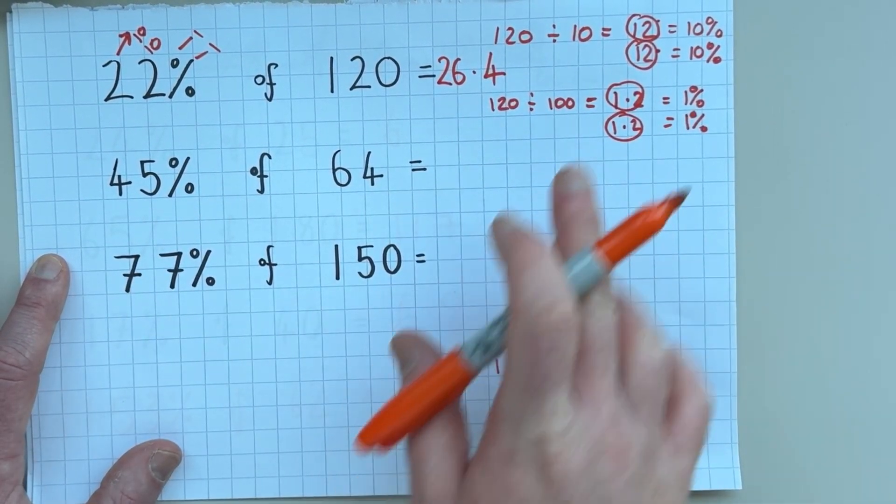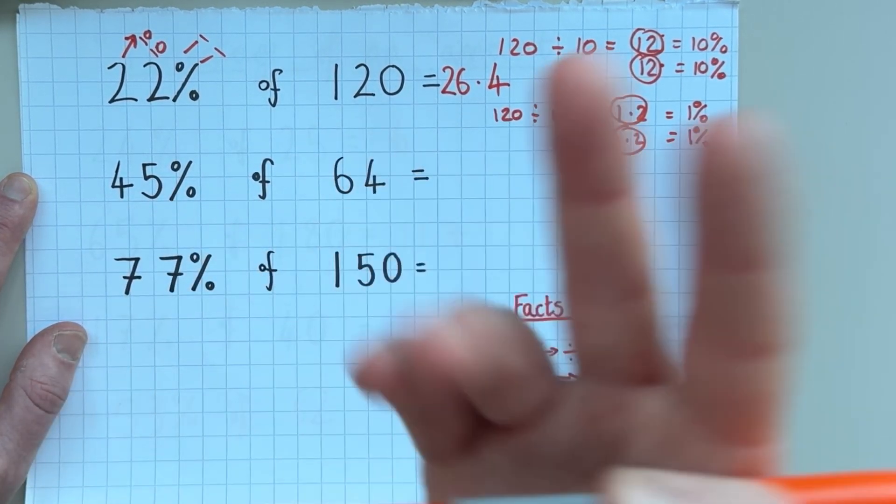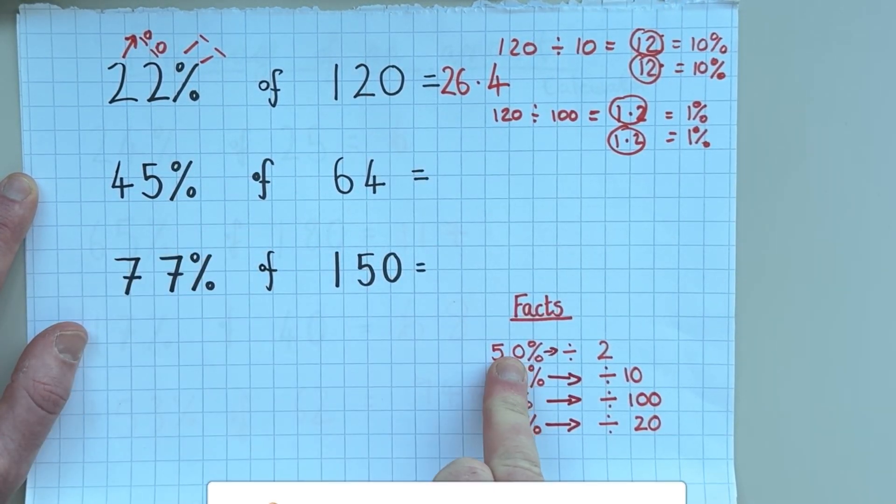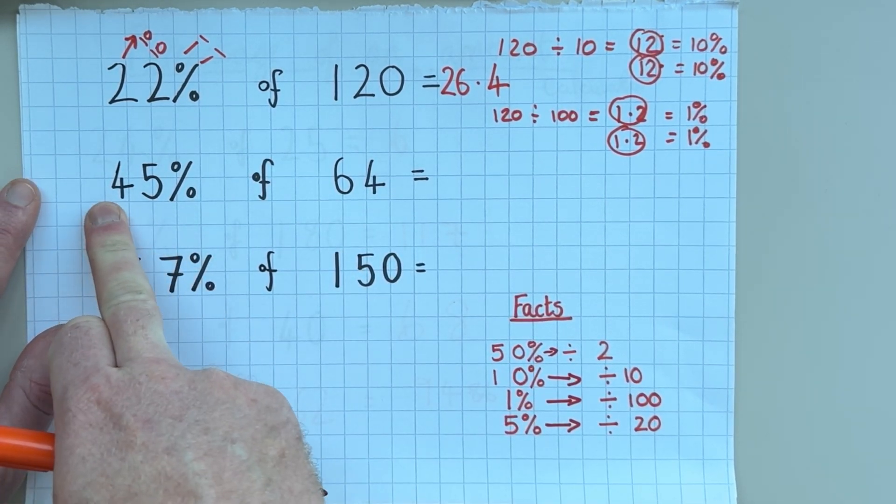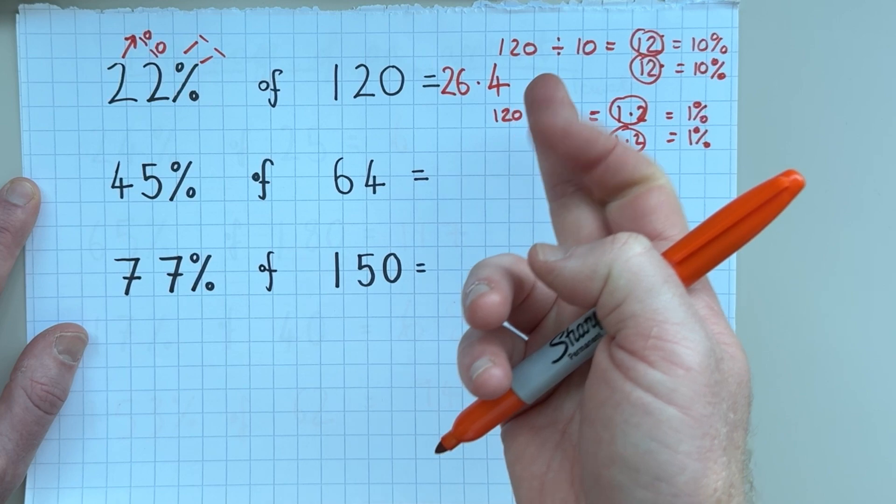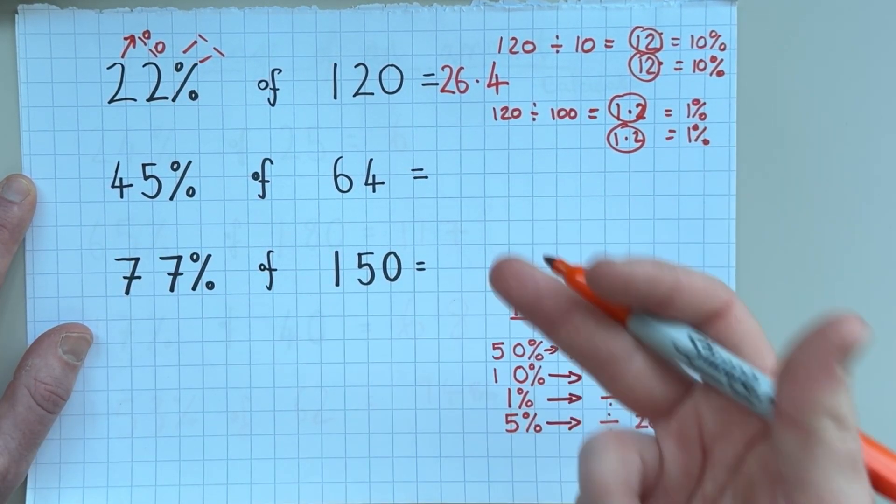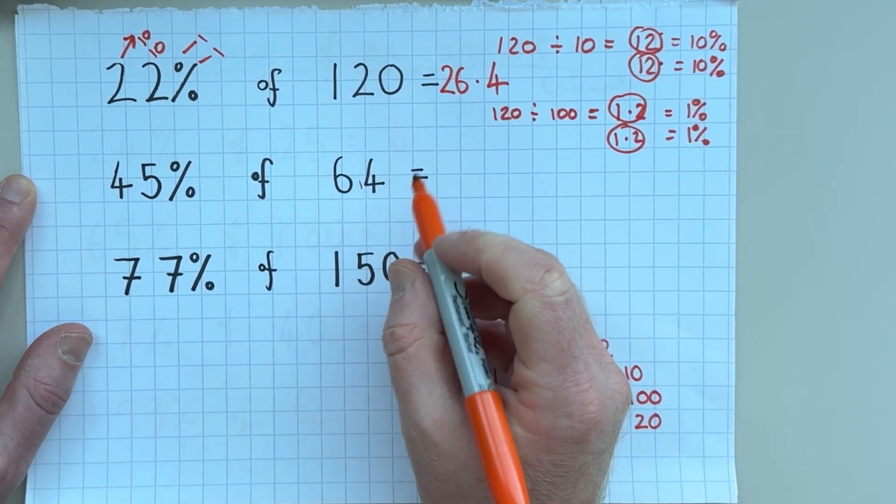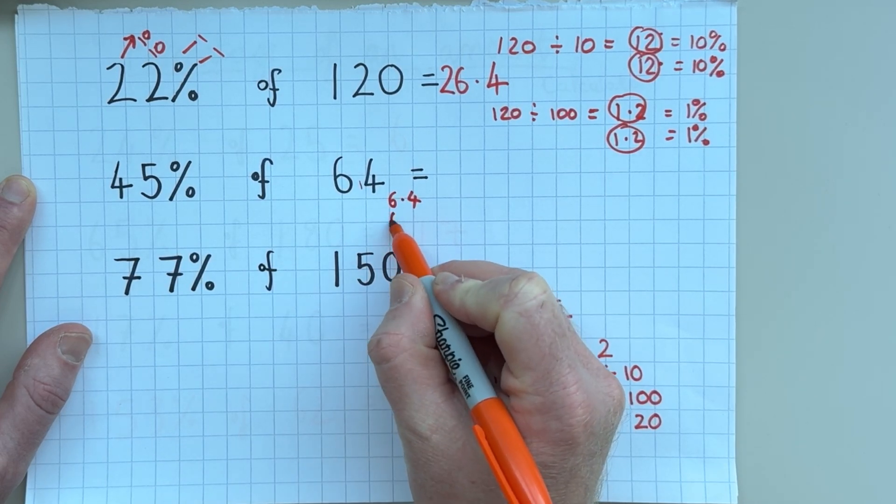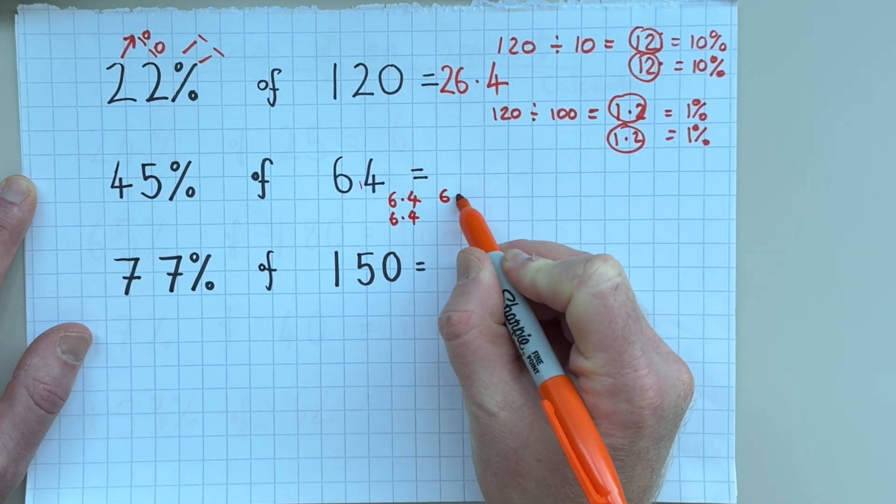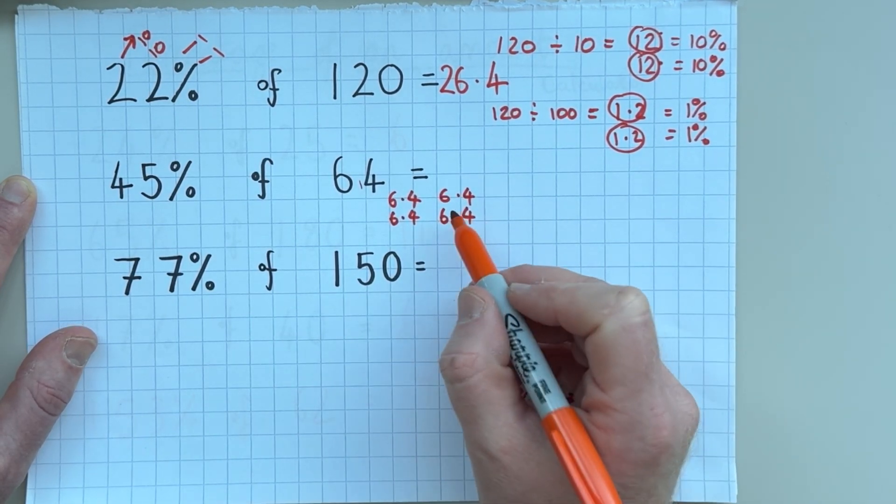So I'm going to do the next two questions with less working out. So here I've got 45%. So I've got two options here. I could either find 50% of 64 and then take away 5%. Or I could work out 10%, 10%, 10%, and then 5%. So I think what I'm going to do is I'm going to do the 10%, 10% thing. So 10% of 64 is 6.4. So that's 10%, 20%, 30%, 40%.